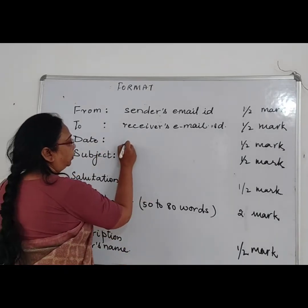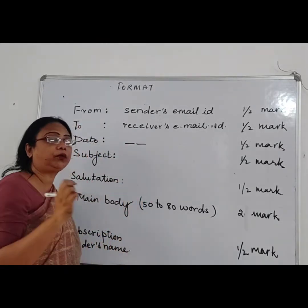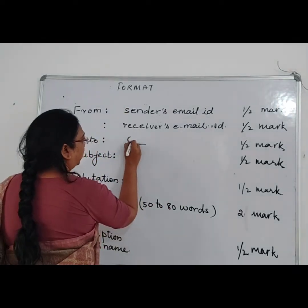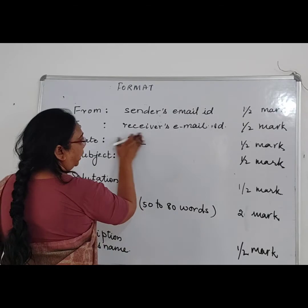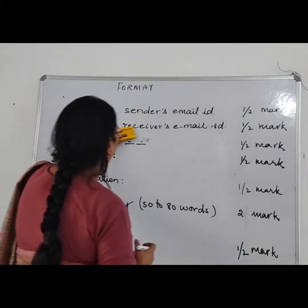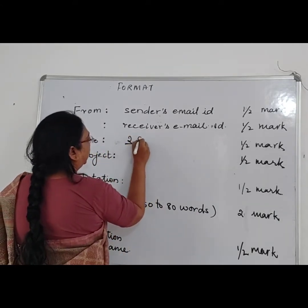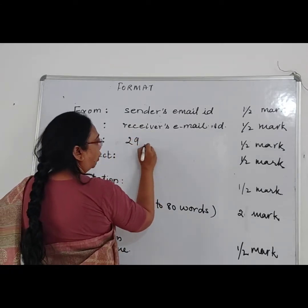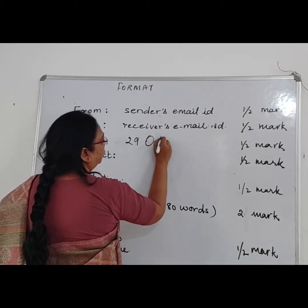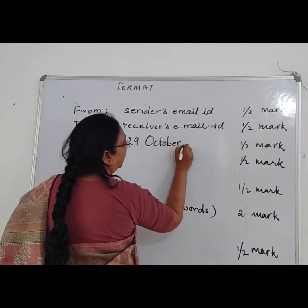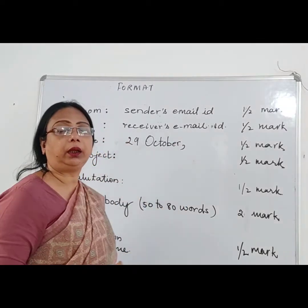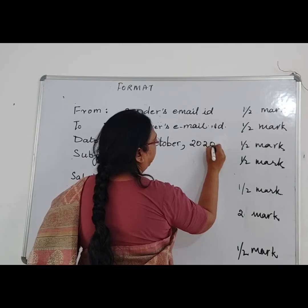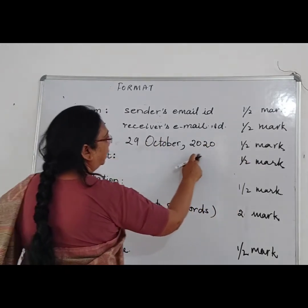Now for the date: the numerical for the date is either single digit or double digit, but it should be written in double digit. If it is the first, you will write zero one. Since today is the 29th, I am going to write 29, then October — O-C-T-O-B-E-R — then a comma, and the year. The year is of four digits, so it is 2024. If you write it correctly, you will get half a mark.